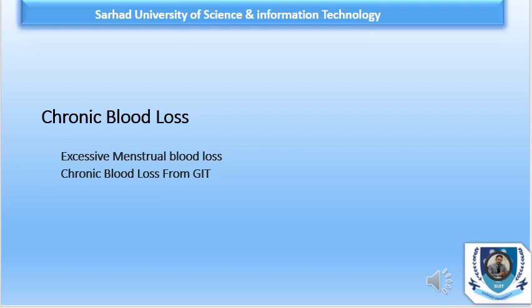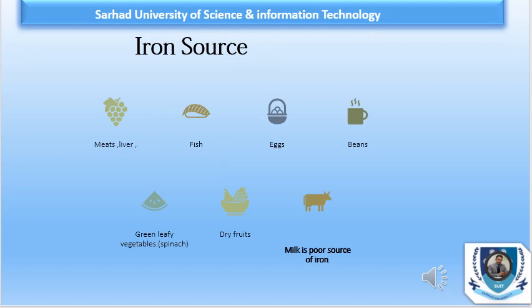Chronic blood loss from the gastrointestinal tract can occur due to hookworm infection, peptic ulcers, chronic aspirin ingestion, esophageal varices, hemorrhoids, or tumors. Good iron sources include meat — especially red meat — liver, fish, eggs, beans, green leafy vegetables like spinach, and dry fruits like apricots. Remember that milk is a poor source of iron.